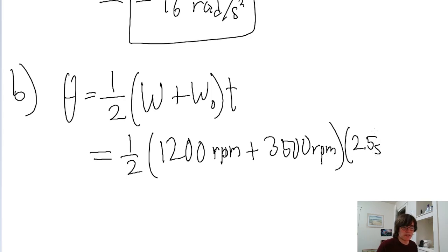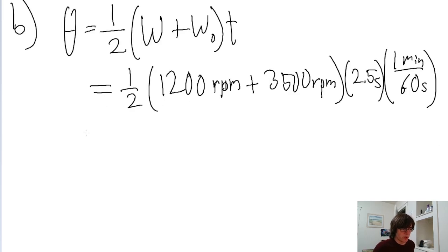One minute for 60 seconds. If you put that into a calculator, then we find about 98 revolutions.